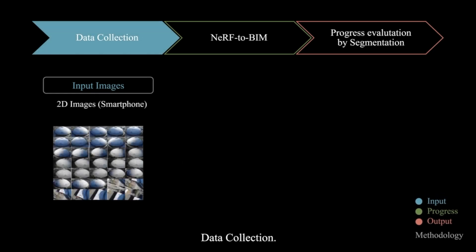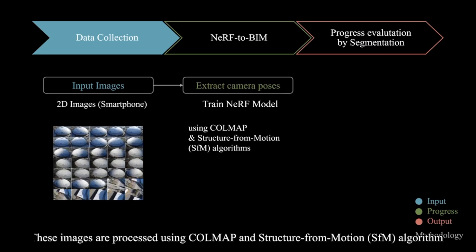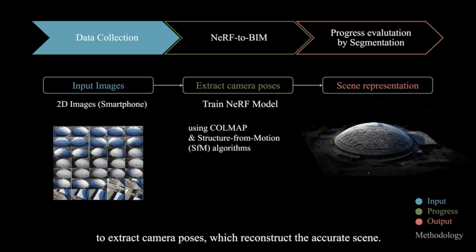Data collection. The first step is capturing images of the construction site. Instead of using expensive LiDAR equipment, we use standard smartphones to capture a series of 2D images from different angles, providing comprehensive visual coverage of the site. These images are processed using Colmap and structure from motion algorithms to extract camera poses, which reconstruct the accurate scene.